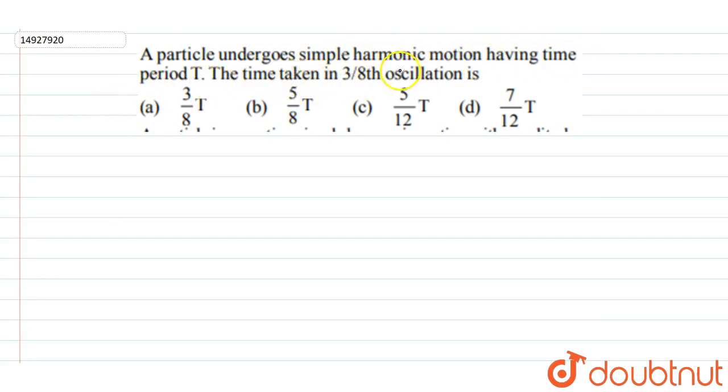Now we need to find out time for 3/8 oscillations. So we have to find out time for 1/4 plus time for 1/8. We can break the concept of 3/8 because 3/8 is equal to 1/4 plus 1/8.